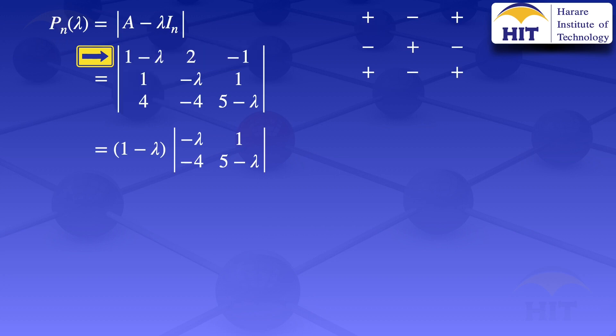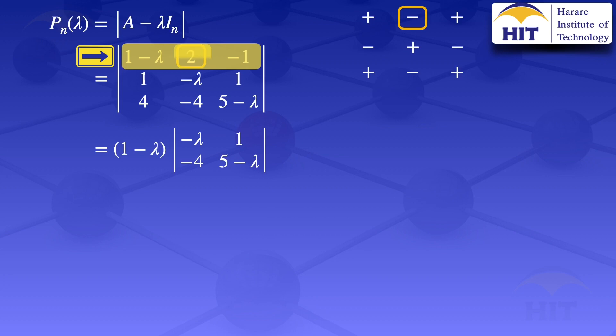We now go on to the next element, which is 2. Comparing it with the array, we see that it's sitting on a negative. We close the row and column containing the 2, then multiply 2 by its sign in the array, then by the determinant of the uncovered elements. The result will be minus 2 times the determinant of 1, 1, 4, 5 minus lambda.